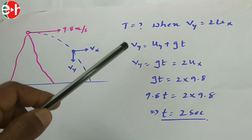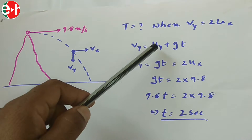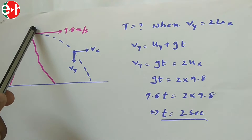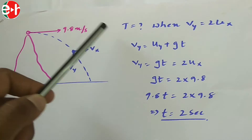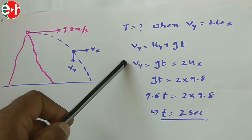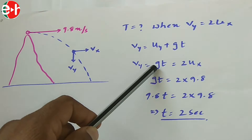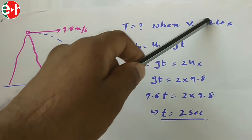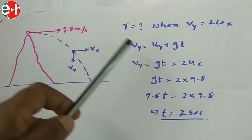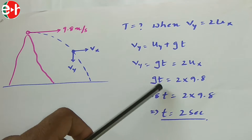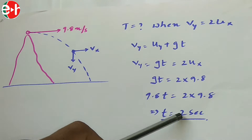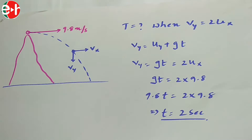Using Vy = Uy + g·t, and since the initial vertical velocity is zero, Vy = g·t. Setting this equal to 2·Ux where Ux = 9.8 m/s, we get g·t = 2 × 9.8, which gives t = 2 seconds.